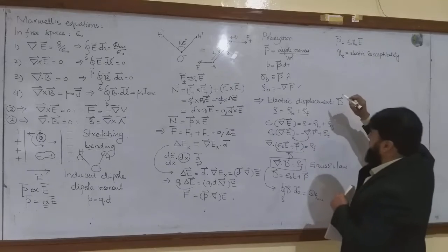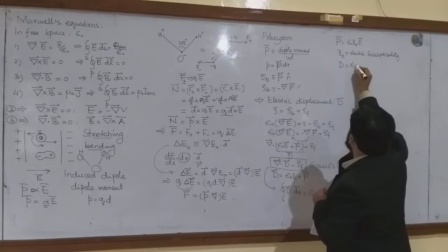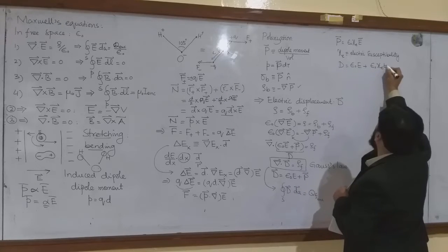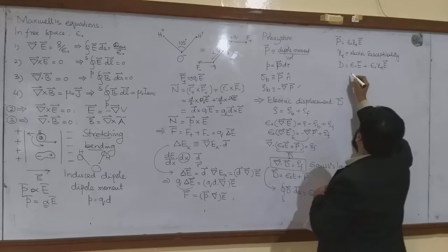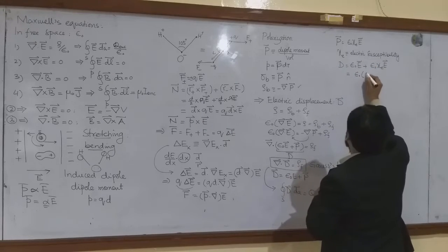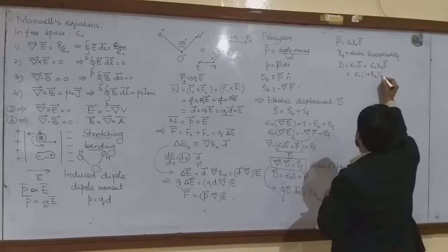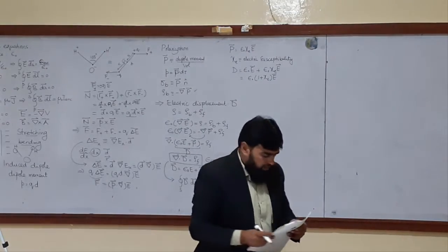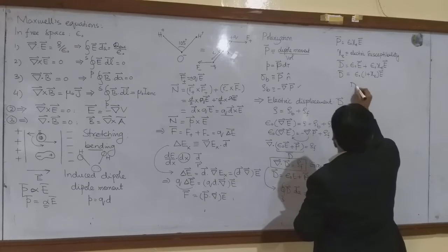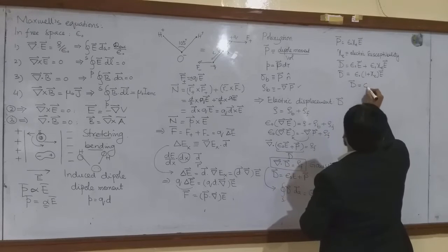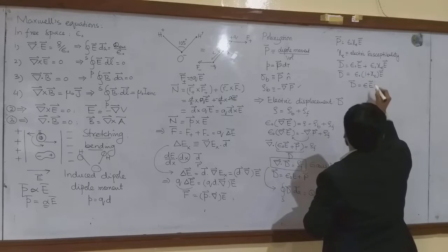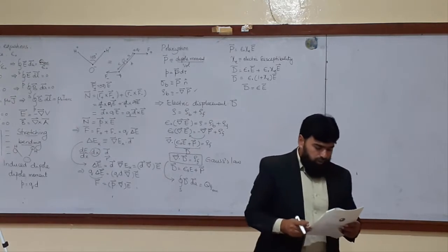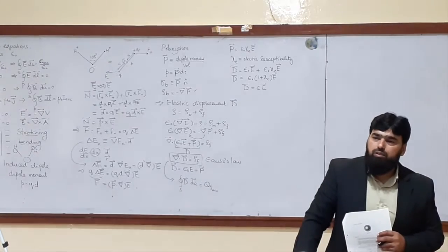Replacing P = ε₀ χₑ E into D = ε₀E + P, we get D = ε₀E + ε₀ χₑ E, which gives D = ε₀(1 + χₑ)E. So I can write D = εE, where epsilon is the permittivity of the material, not of free space. In free space we have ε₀. Permittivity means permission to the electric field lines — how much a material is permitting the electric field lines.